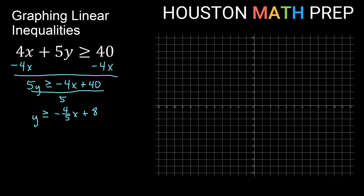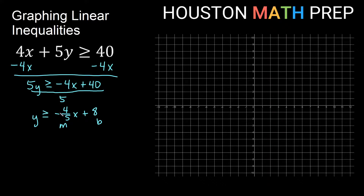Remember this is mx plus b form. Our m is negative 4/5 and our b is positive 8. Now let's think about the equal part of this — we'll come back to the greater than part later. If we're just graphing y equals negative 4/5 x plus 8, remember we start at the y-intercept and then use the slope to get another point.